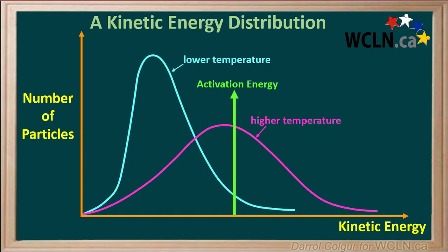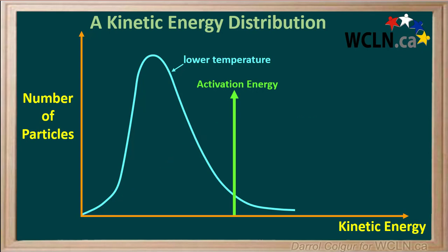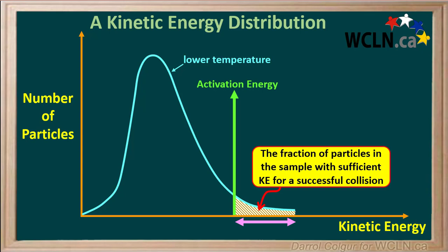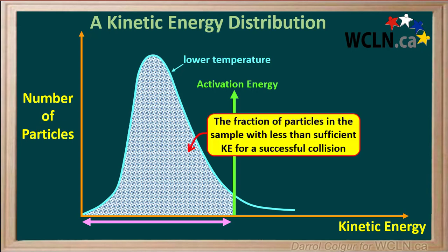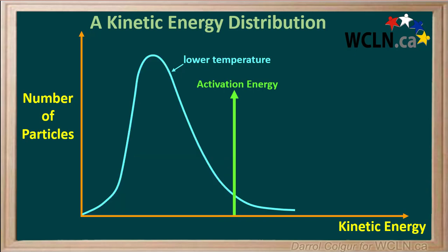We can add this activation energy to the kinetic energy distributions at low and high temperature. We'll look at each curve separately. Here is the curve or distribution for the lower temperature. The area under the curve above the activation energy represents the fraction of particles with sufficient kinetic energy for a successful collision, and the area below represents those without sufficient energy. We'll make a small triangle which roughly approximates the area above the activation energy — the fraction of particles with sufficient kinetic energy.